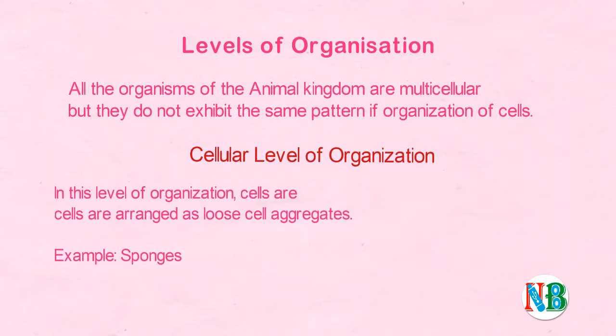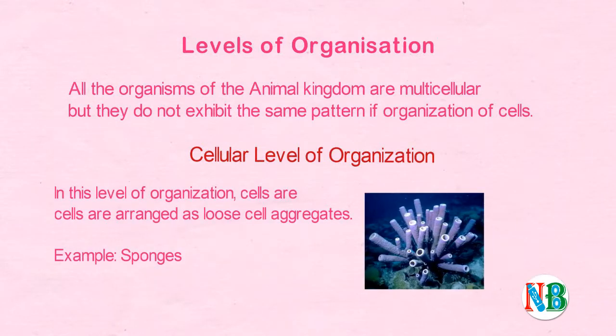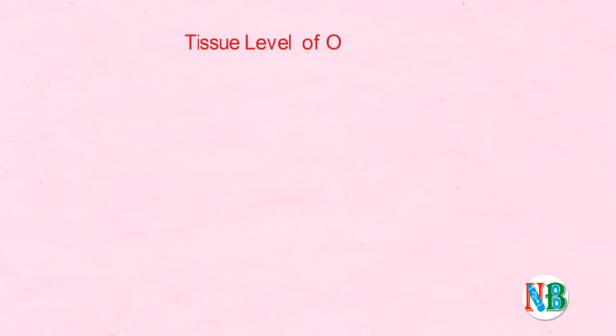In this level of organization, cells are arranged as loose cell aggregates. Example: sponges.